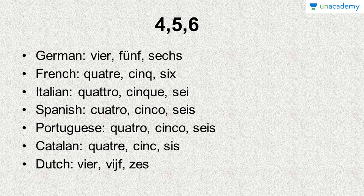In Italian it becomes quattro, cinque and sei — it's 'sei', not 'six' here. In Spanish it's cuatro starting with C, cinco and seis with an S in it. In Portuguese just the spelling changes a bit: quatro with a Q, cinco and seis. In Catalan it's quatre, cinc and sis. In Dutch it's a bit different spelling altogether: vier, vijf and zes. Dutch is more towards English and also resembles a bit with German. Vijf is more towards the English 'five', and zes.